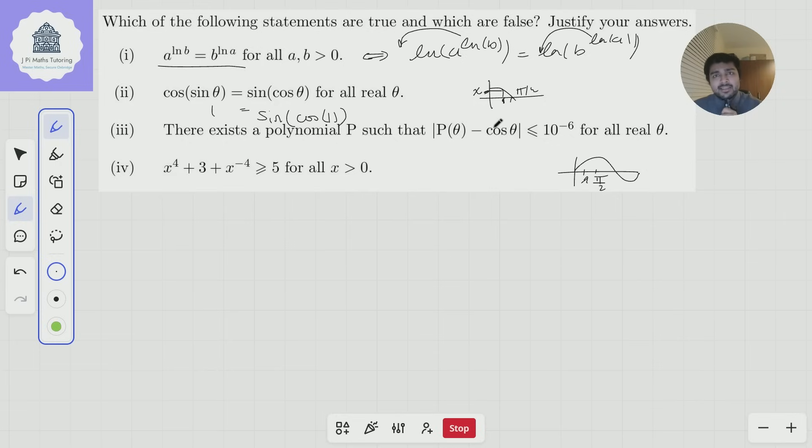Well, the idea here is unless P(θ) is a constant function, then P(θ), as θ goes to infinity, P(θ) will approach either plus or minus infinity as θ goes to infinity. Again, that's provided that the degree of P is bigger than or equal to 1.